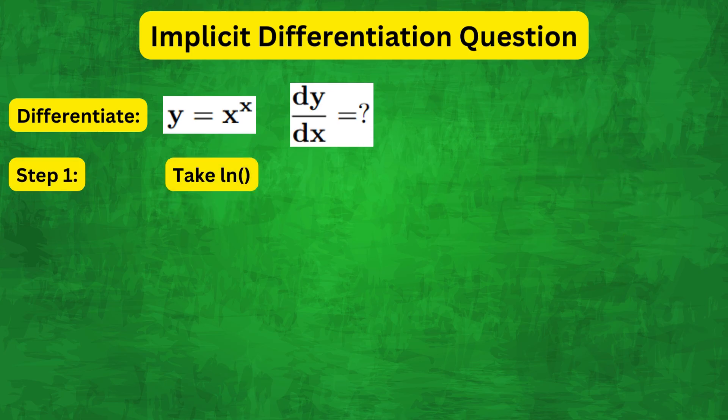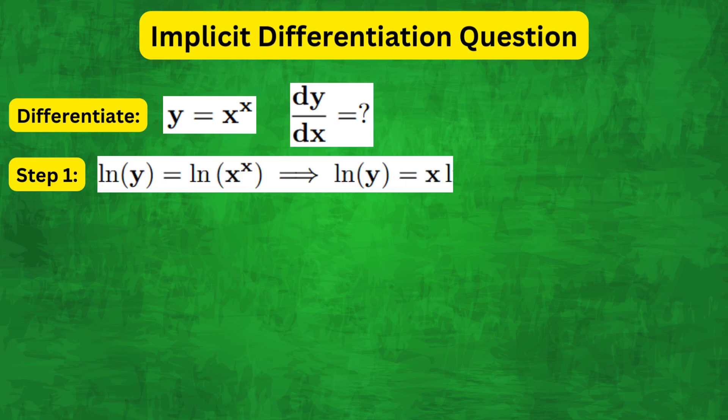So the first thing we need to do is take natural logs on both sides. So we get natural log of y equals natural log of x to the power of x which of course is equal to x natural log of x.